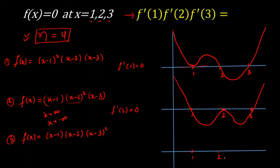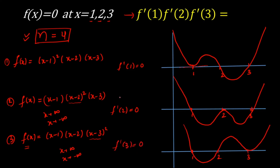In Case 3, the repeated root is at x = 3. As x → ±∞, f(x) is positive. The graph touches the x-axis at x = 3 with a local maximum, so f'(3) = 0. In all three cases, one of the derivatives is 0, so the product f'(1)·f'(2)·f'(3) = 0 in every case. That is the final answer: 0.